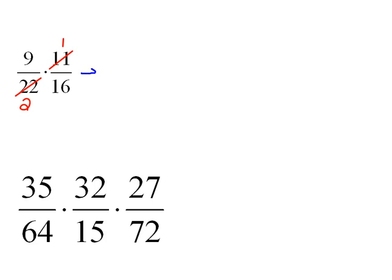So I just have to multiply what I have left. I have 9 times 1, which is 9, over 2 times 16, which would be 32. So my answer would be 9 over 32.